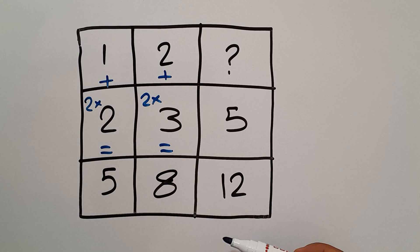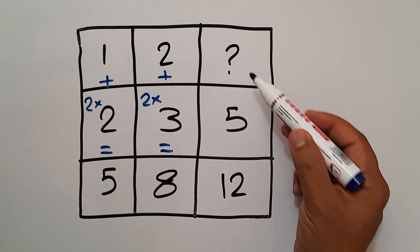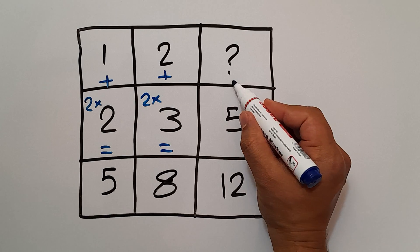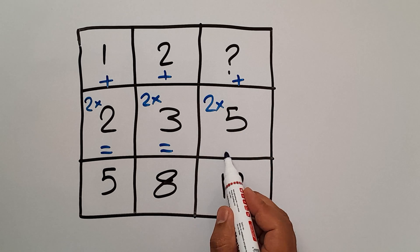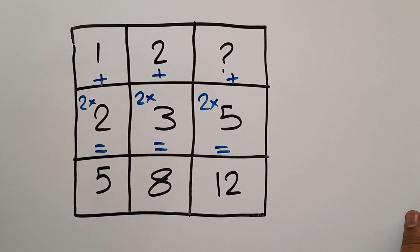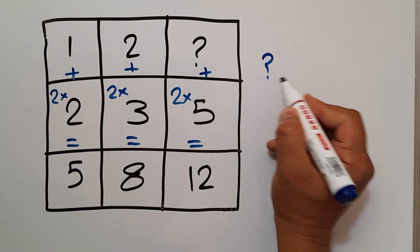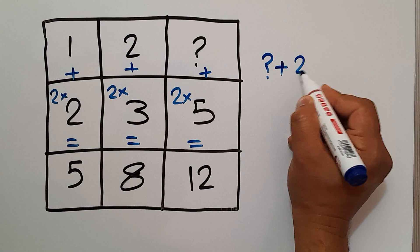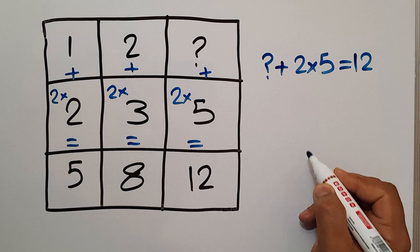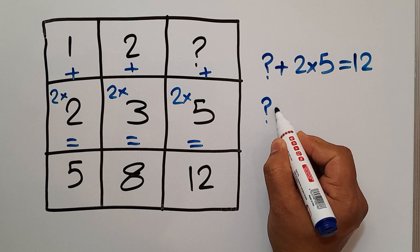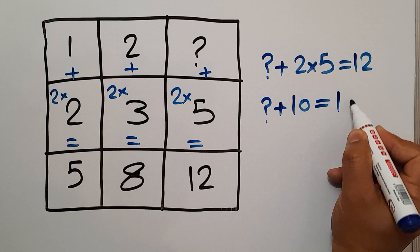Now, let's use this pattern to find the missing number. Question mark plus 2 times 5 equals 12. So, question mark plus 2 times 5 gives us 12. So, question mark plus 10 will be equal to 12.